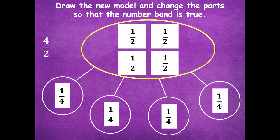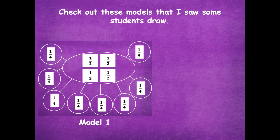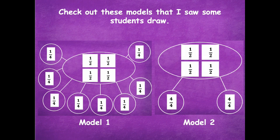Remember, we have four halves, and four halves equals two. So here are some models students drew. Model one: we have four halves as the whole, and eight one-fourths as the parts. Model two: the whole is still four halves, but this time two four-fourths as the parts.